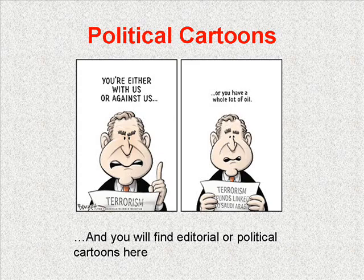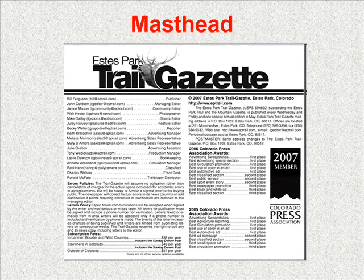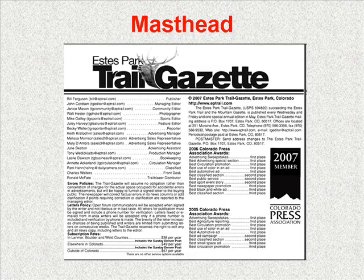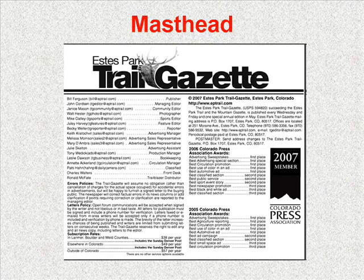Another important item that appears on the newspaper's editorial page is the masthead, also known as the staff box, which includes a statement providing the details of publication, who the editors, photographers, and other key staff members are, as well as a synopsis of the newspaper's editorial policy. The editorial policy will generally tell who determines the content, if letters to the editor are accepted, if advertising is accepted, what the subscription rates are, and how errors will be corrected, among other important information.